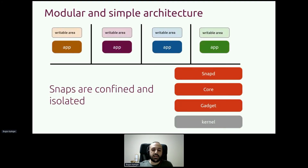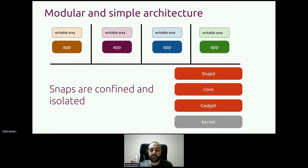When you look at a basic Ubuntu Core system, it consists of a kernel snap — which, as the name implies, is the kernel. Then we have the gadget snap, which is the boot assets — U-boot for ARM-based systems and GRUB in general for x86-based systems. Then we have the core snap, which is the root file system of Ubuntu Core itself. And then we have the snapd snap, which is a daemon that controls all of the snaps within your Ubuntu Core system.